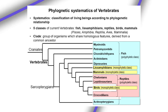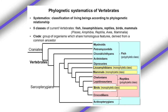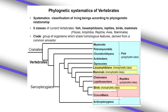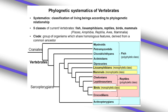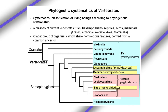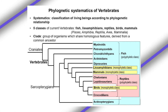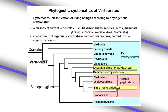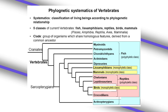Among current vertebrates, five classes are described, referring to different positions in phylogenetics. Fish is in fact a polyphyletic class presenting different clades from different ancestors. By contrast, mammals are well defined in terms of phylogenetic systematics as a monophyletic class with one common ancestor which defines the clade of mammals.